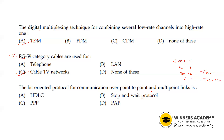RG-58 is used for Thin Ethernet. HDLC stands for High Level Data Link Control, and it is a bit-oriented protocol.